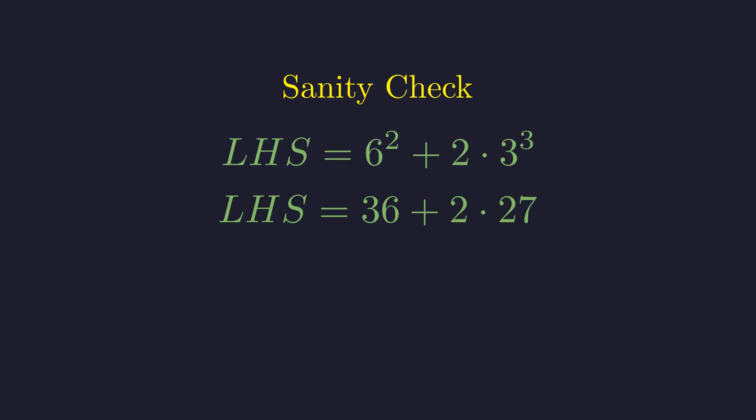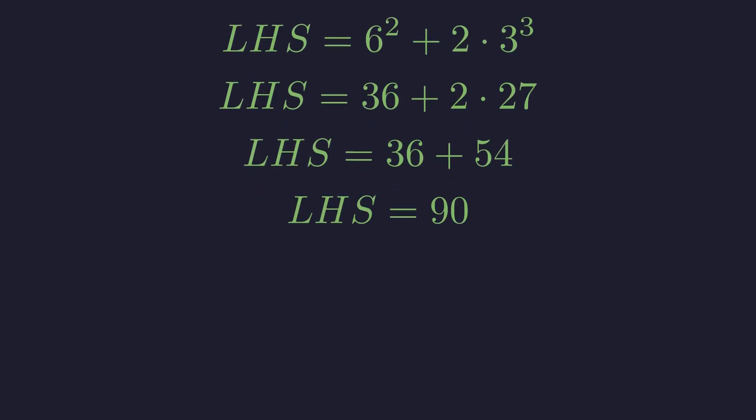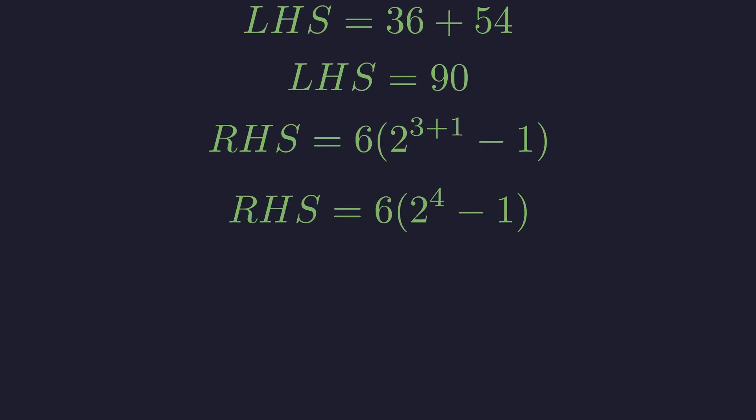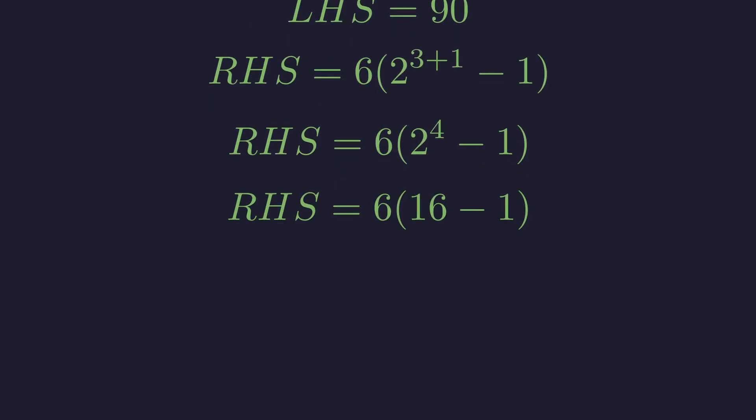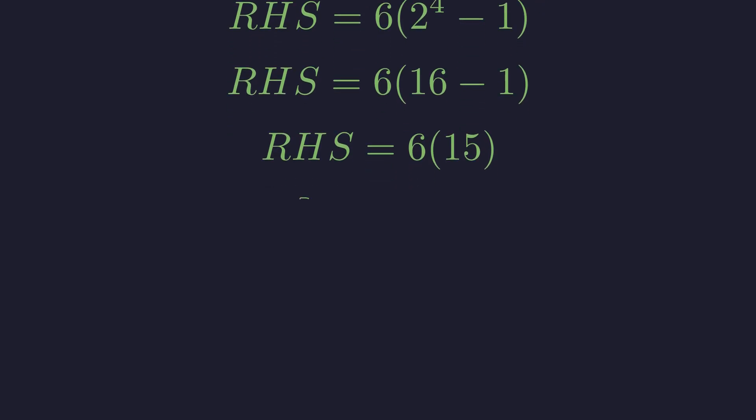It is prudent to verify one of the solution pairs in the original equation. We will test the pair where m is 6 and n is 3. First, we evaluate the left-hand side by substituting m equals 6 and n equals 3. The powers evaluate to 36 and 27. Next, we perform the multiplication. The sum gives 90. Now we evaluate the right-hand side. The exponent becomes 4. 2 to the power of 4 is 16. The value in the parenthesis is 15. The final product is 90. The sides are equal, so the solution is correct.